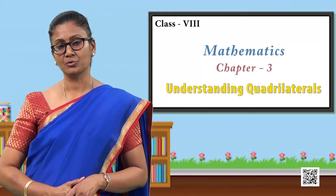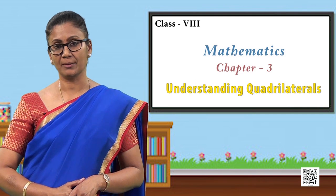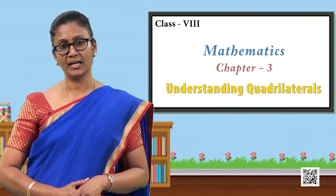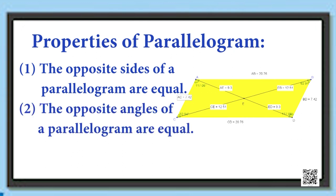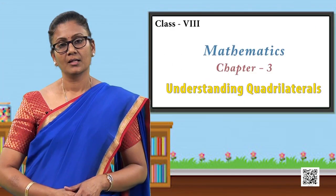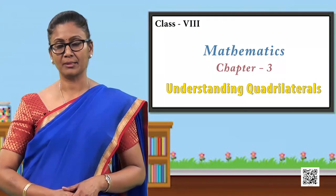From the video, we can verify all the properties of a parallelogram. Let us list them: the opposite sides of a parallelogram are equal; the opposite angles of a parallelogram are equal; and the diagonals of a parallelogram bisect each other.